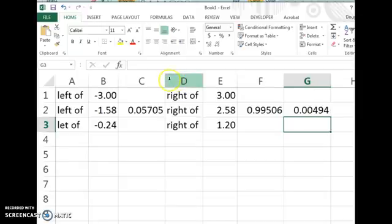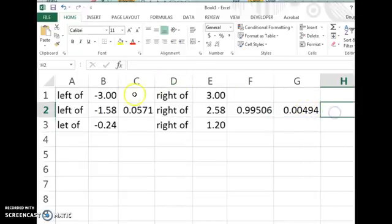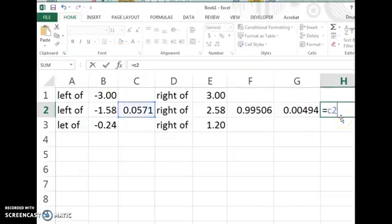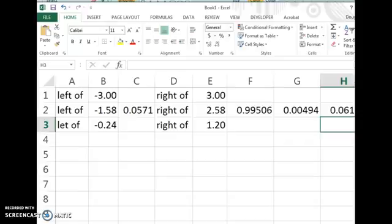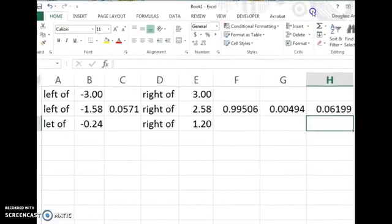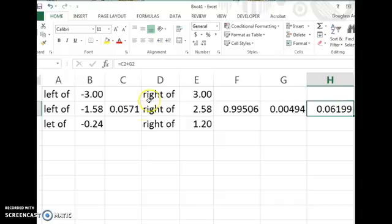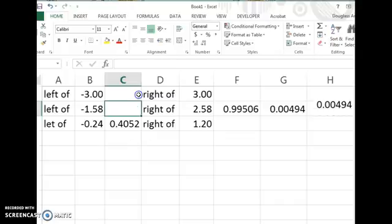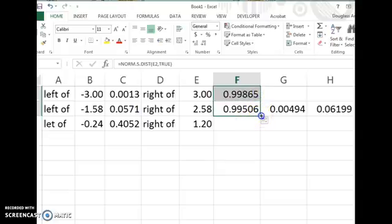And so the final answer for this problem that we were looking for is the sum of those two areas. So the part to the left there of the first z value plus the part to the right of the second z value. Let me slide on over here. And there's your solution. And since I was using cell reference, I can drag these up and get my answers for all the other parts of the problem as well.